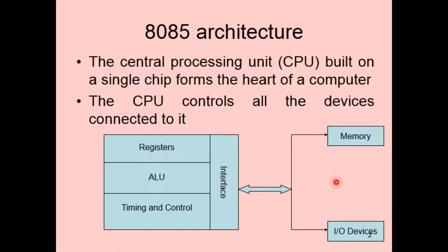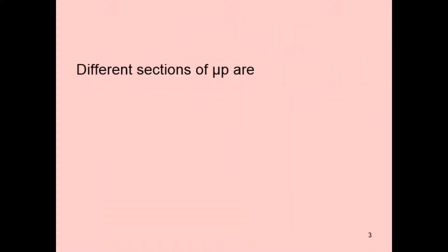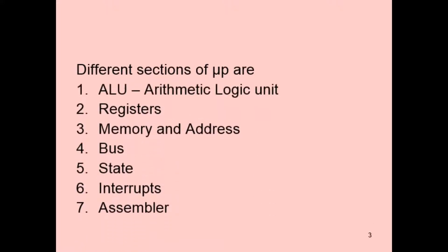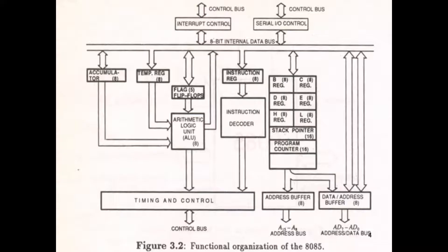The microprocessor is interfaced with memory and input/output devices which are external to it. The different sections of a microprocessor are: ALU, registers, memory and address, buses, state, interrupts, and assembler. These seven parts are the different sections of a microprocessor, and here we can find the functional organization of the Intel 8085 microprocessor.